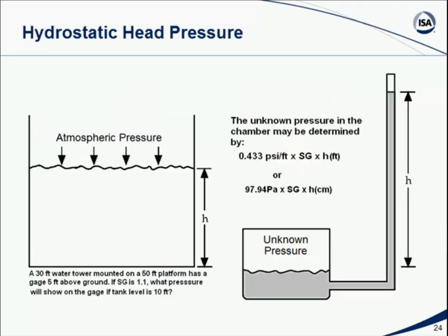Based on basic physical principles — that a column of fluid exerts certain pressure — we can use a well manometer: a container full of liquid with a vertical column vented to the atmosphere. We place a pressure into this container, the pressure pushes down on the fluid and pushes the fluid up the vertical column. The pressure is proportional to the height of the fluid and the specific gravity of the fluid. We can calibrate markings along this vertical column and use it as a readout.